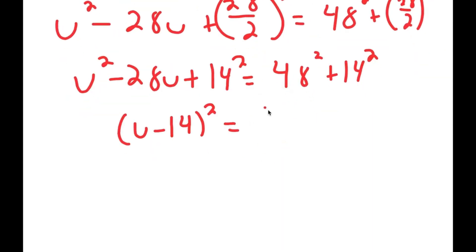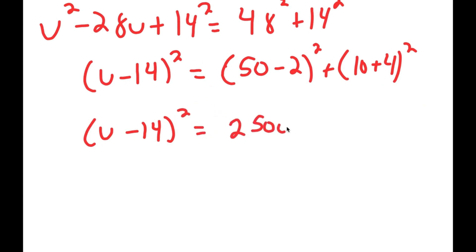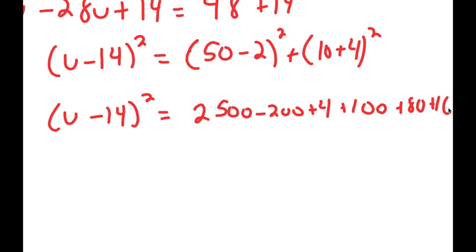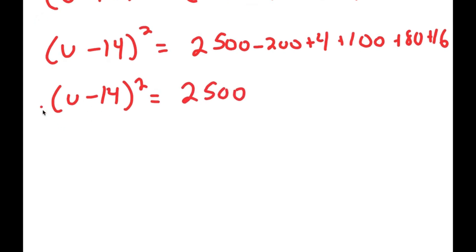So (u minus 14) squared equals 48 squared plus 14 squared. I rewrite 48 as (50 minus 2) squared and 14 as (10 plus 4) squared to expand. Expanding gives 2500 minus 200 plus 4 plus 100 plus 80 plus 16. Adding these up, I get (u minus 14) squared equals 2500. Taking the square root on both sides gives u minus 14 equals positive or negative 50.